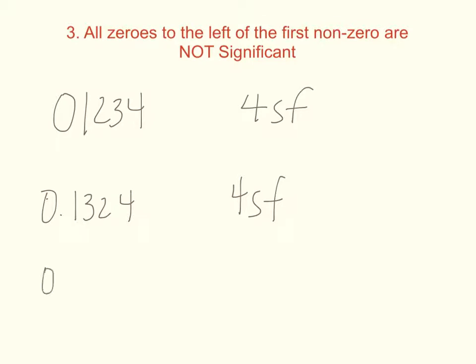Or sometimes you'll have numbers like this, where there's lots of zeros and then a small decimal. The only significant figures here are the 3 and the 4, so that's two sig figs.